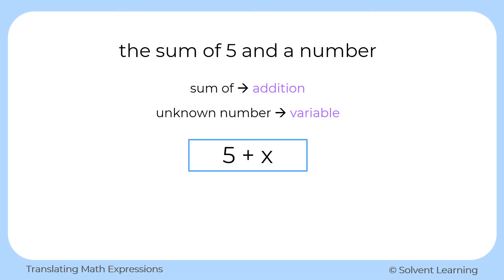Now remember, with addition, the order does not matter. That's because of the commutative property of addition. So we could write this the other way around as x plus five. Either way, it still represents the same expression.